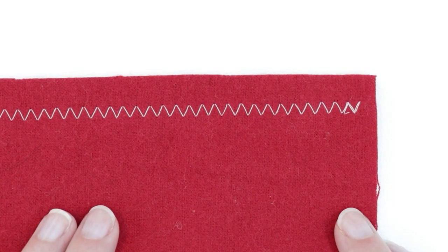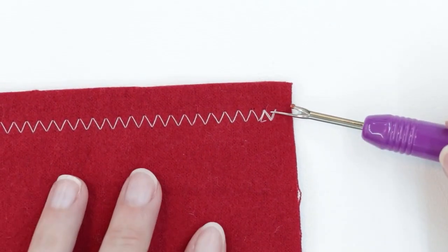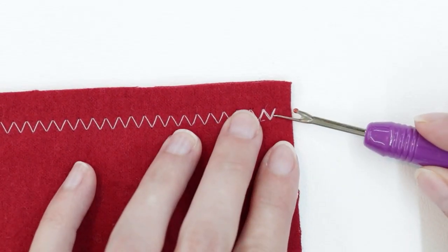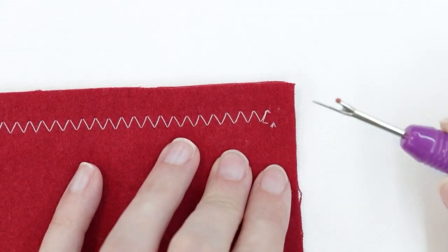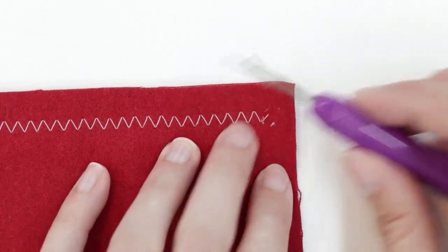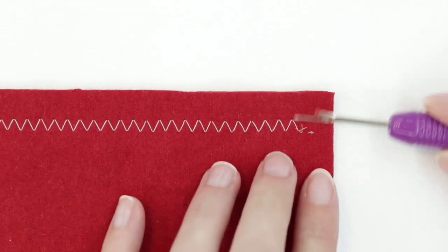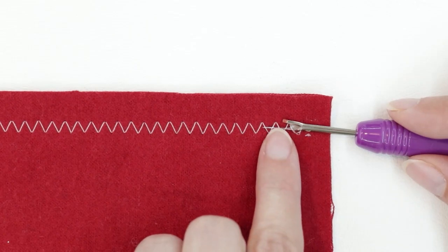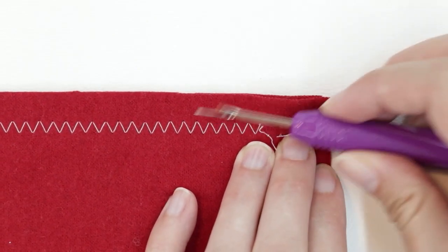Unpicking a zigzag stitch is actually easier than unpicking a straight stitch. Again, we're going to start at the section with the backstitching. Undo all of those stitches. When you get to the section with the zigzags that are just a single layer, you can simply slide the point of your seam ripper under those stitches and press.